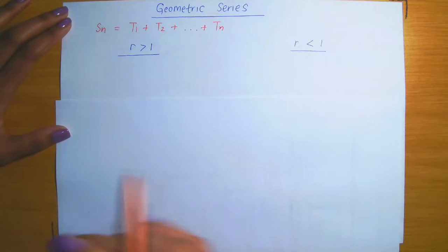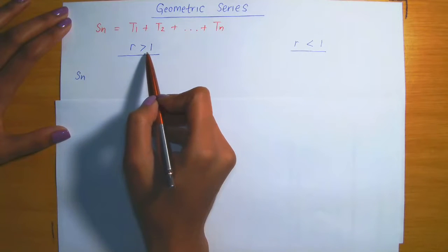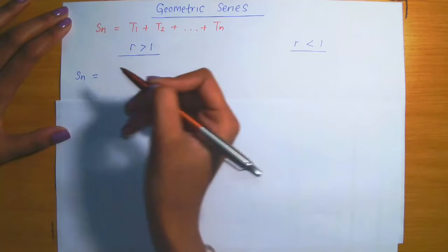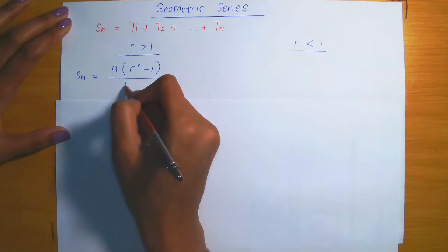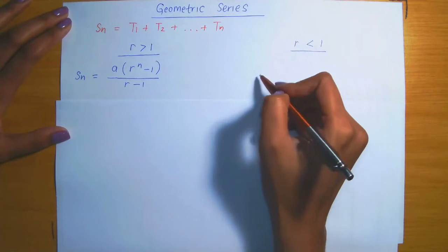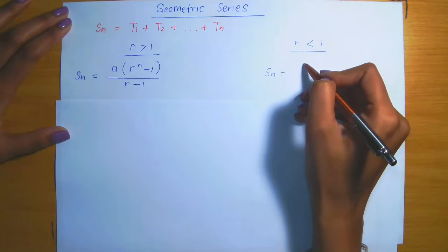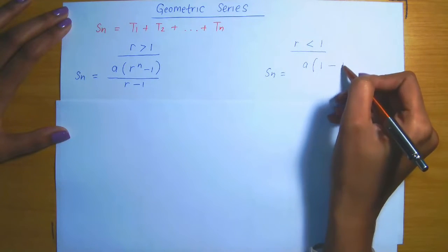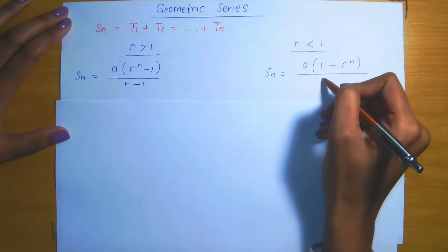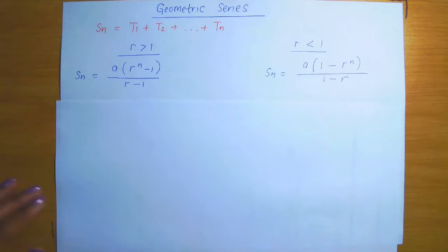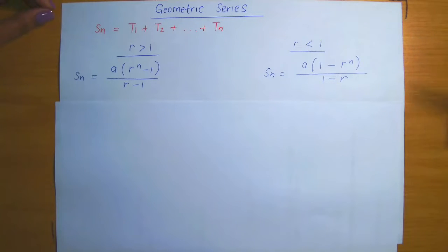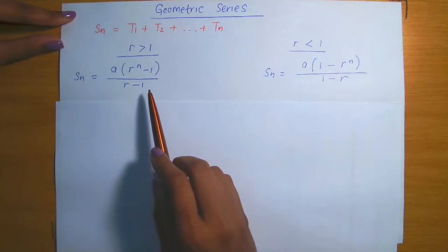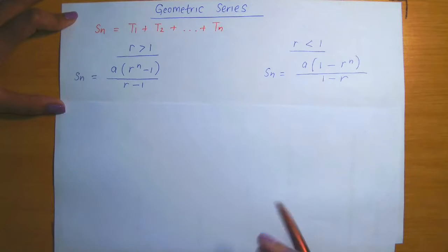The formula for the sum to n terms of a geometric sequence where the common ratio is greater than 1 is: a times (r^n minus 1) divided by (r minus 1). In the second case, when the common ratio is less than 1, the sum to n terms is given by: a times (1 minus r^n) divided by (1 minus r). Each of these formulas can be proven, and I'll provide those proofs in an upcoming video.